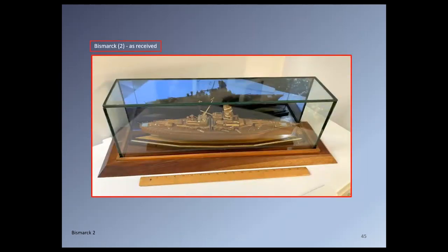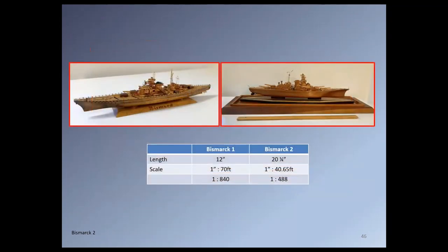This is model number two. The model has the characteristics of the same prisoner-of-war stable as Bismarck one, but at a larger scale. Compared to the 12-inch-long Bismarck one at one to 70 feet, Bismarck two is a little over 20 inches long, giving us one to 41 feet. Visually, the lines of Bismarck two have a little less racy appearance than Bismarck one, resulting from proportionately shorter fore and aft decks. This is Bismarck one on the left here, and Bismarck two. You can see there's a difference in that it has a shorter foredeck and the aft deck as it has on Bismarck one. That shows you the difference in sizes, 12 inches against 20 and a quarter, and the scale is one to 840 compared to one to almost 500.